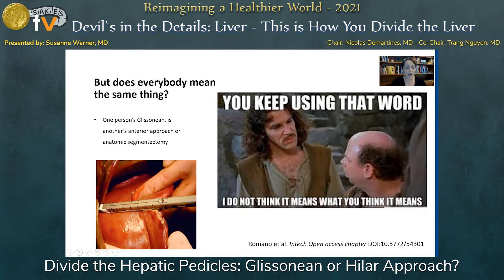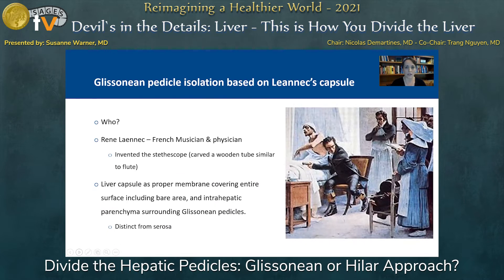That being said, I want to go back to this issue: does everybody really mean the same thing when they say Glissonian versus Hilar? In my experience, one person's Glissonian approach is another's intrahepatic pedicle stapling, or a stapled approach, or anterior approach with anatomic segmentectomy. So I think it's really important that we define what we're talking about. If we're being purists, we're really talking about extrahepatic dissection. Our Japanese colleagues have actually done a lot of great work to characterize what we mean when looking to do a true extrahepatic Glissonian approach.